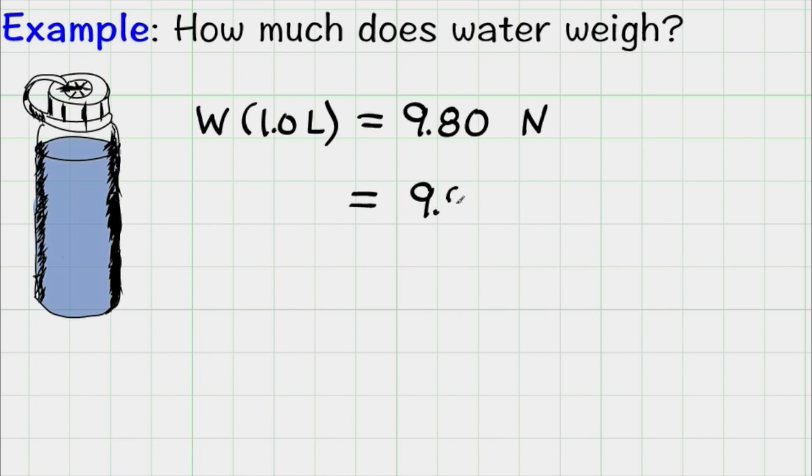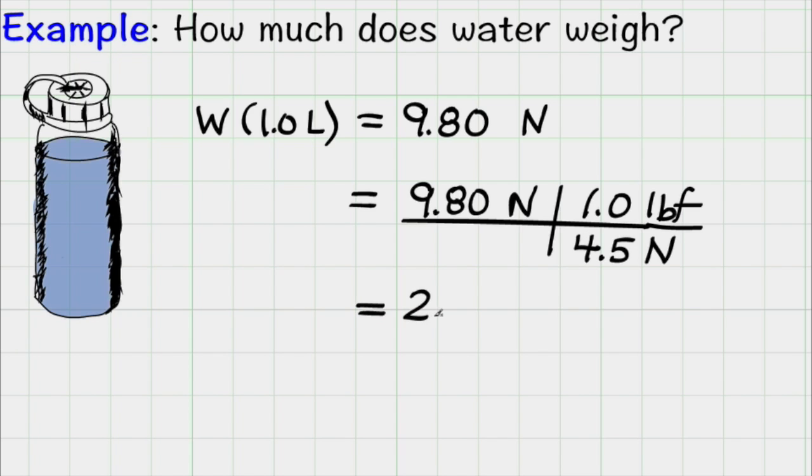And if I want to see this in English units, 9.8 newtons, and then let's see there's 4.5 newtons to two significant figures in one pound force. And this comes out to 2.2 pounds force.